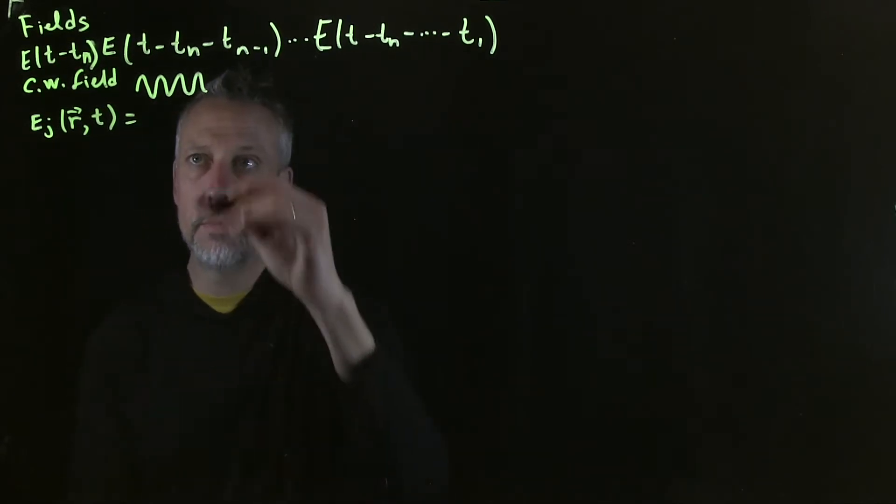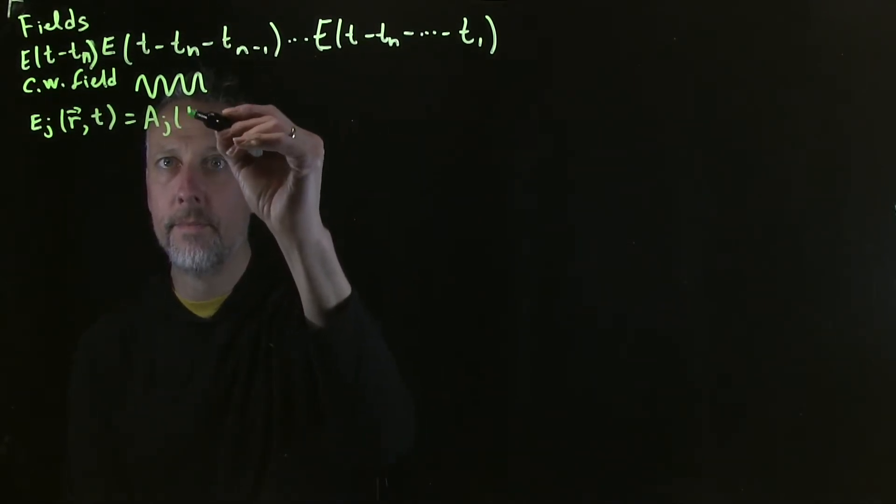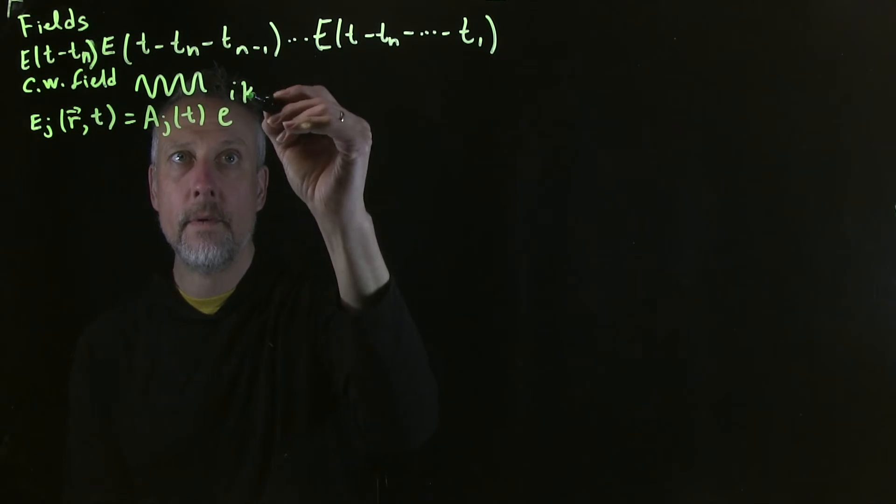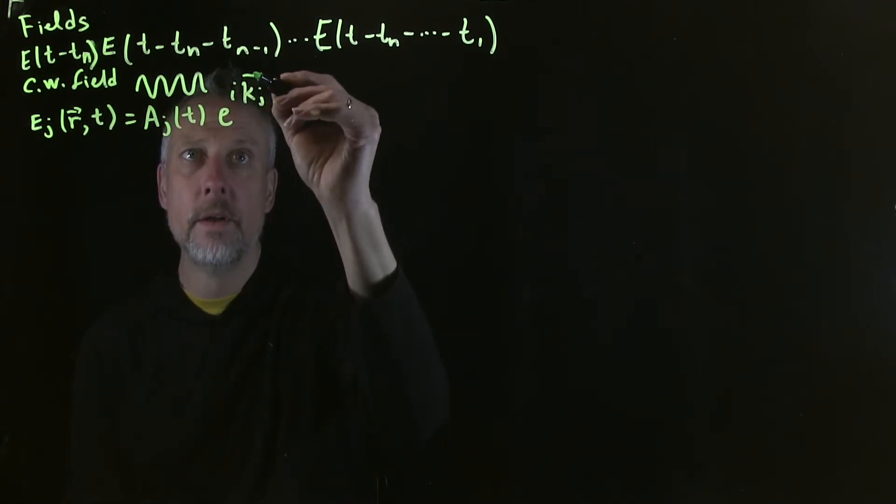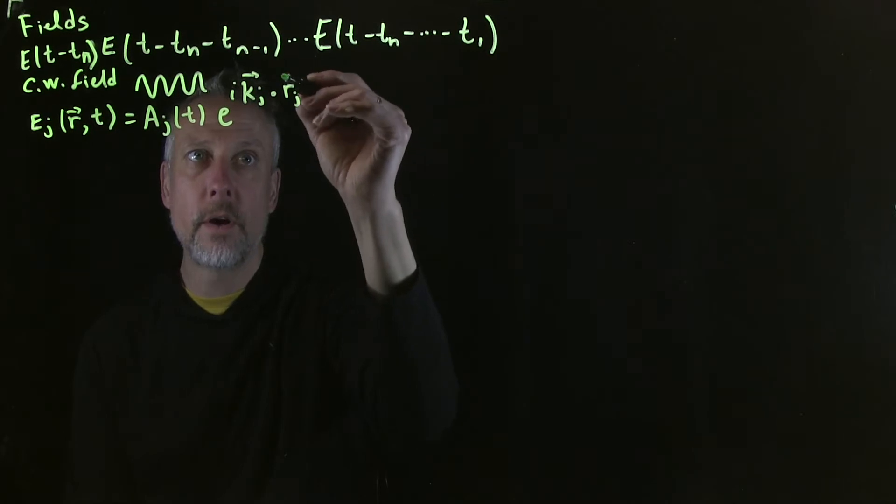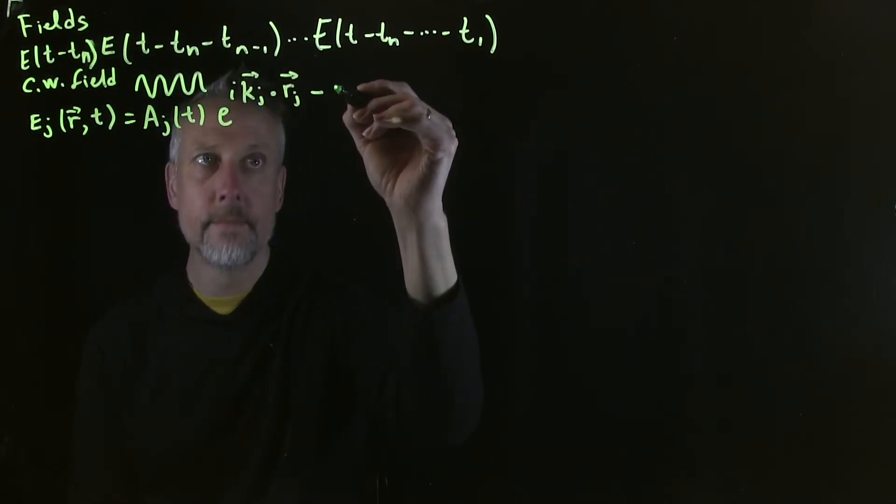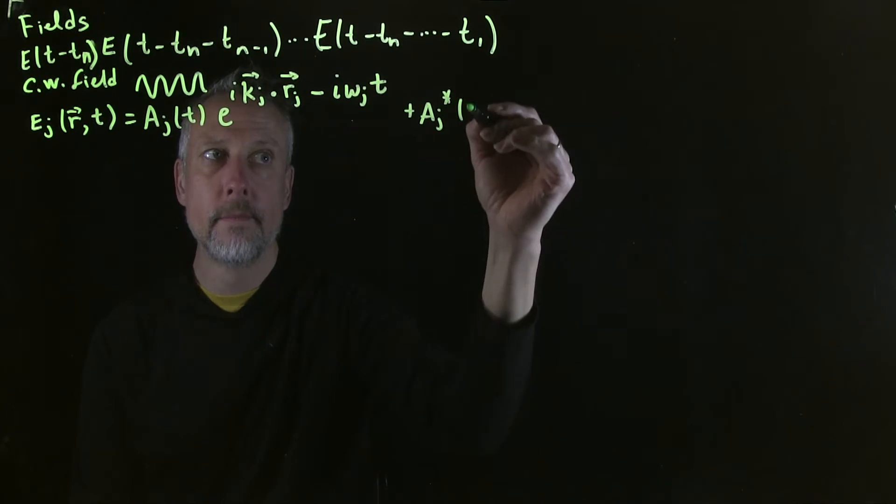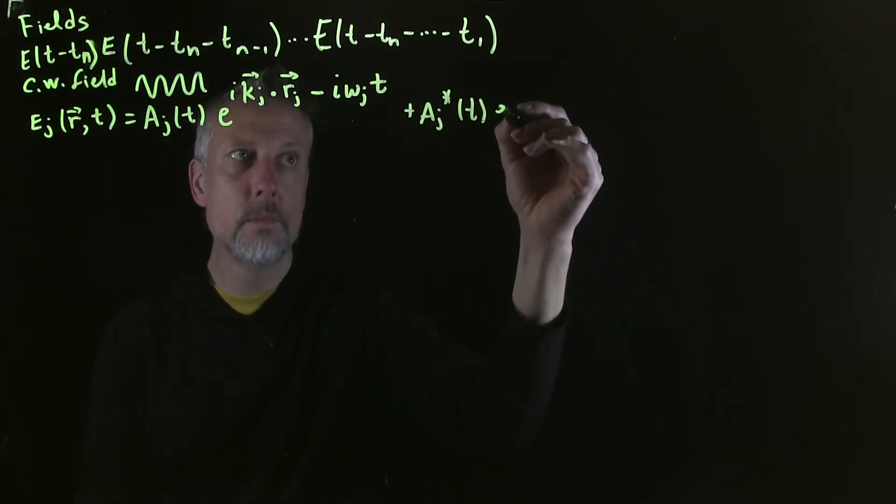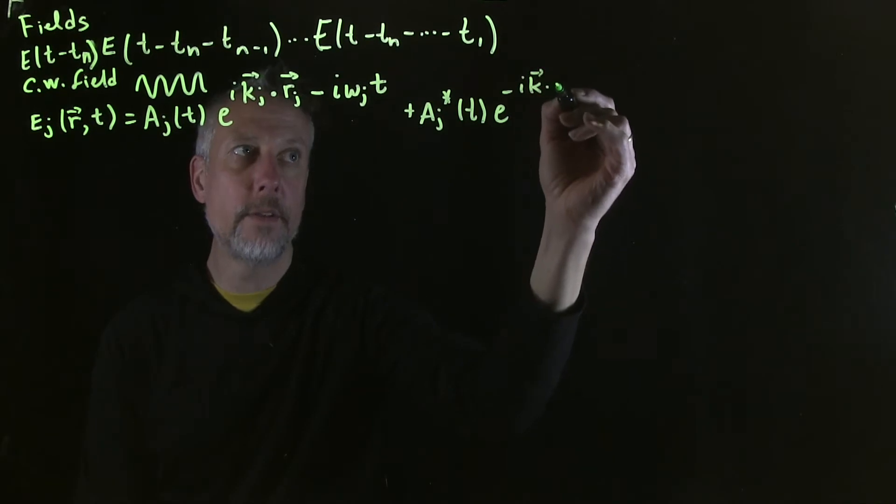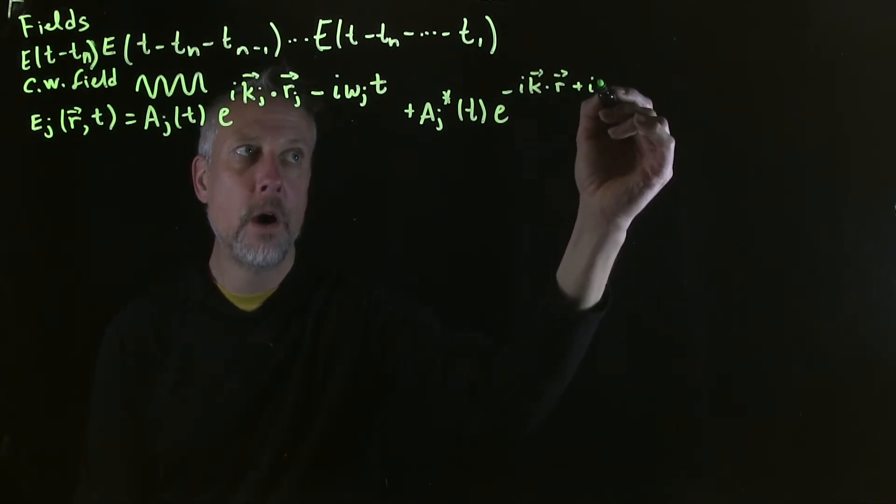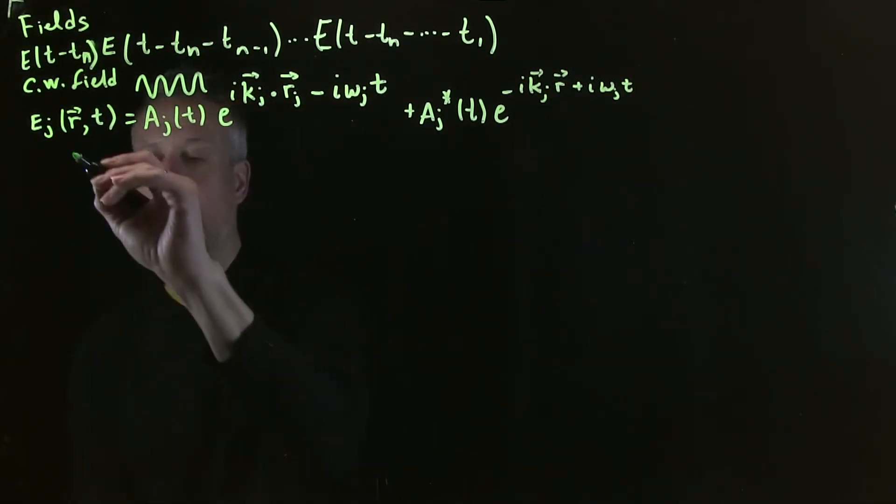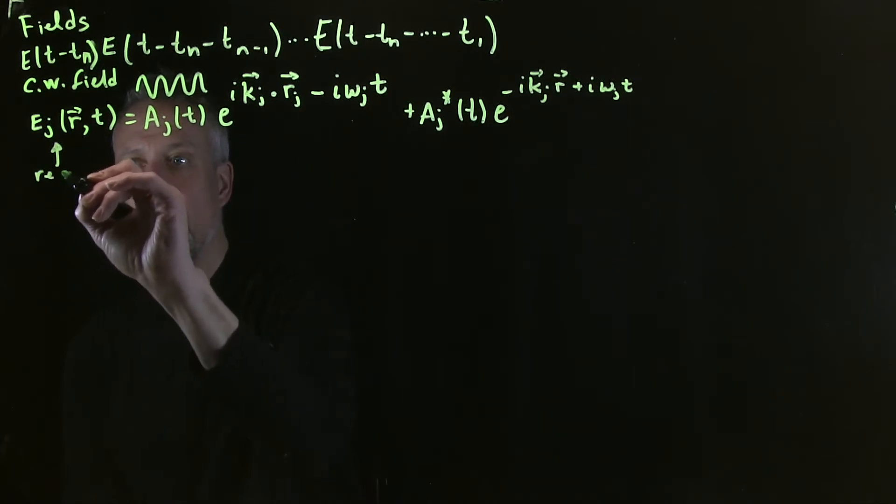One parameterization would be something like this: an amplitude and then a phase. So you'll notice as I'm writing this, that the first term and the second term are complex conjugates of each other. And what does that tell us? It tells us that the time domain representation of the field is real.